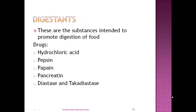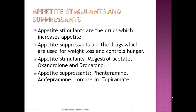Next: digestants. As the name suggests, these are used to promote digestion of food material. The drugs are mainly hydrochloric acid, pepsin, papain, pancreatin, diastase, and taka-diastase. And next: appetite stimulants, which increase hunger in human beings. They are mainly megestrol acetate, oxandrolone, and dronabinol.